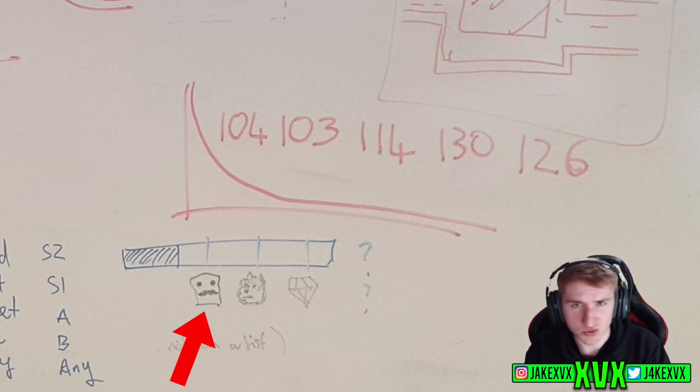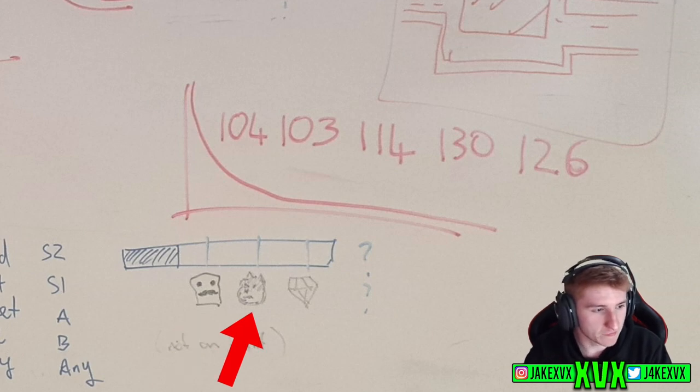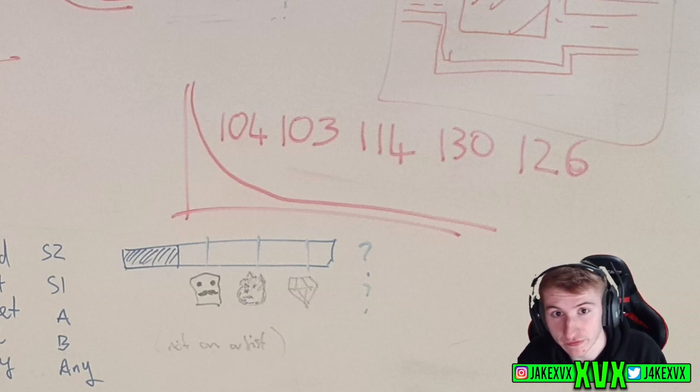We've got some kind of square face with some kind of moustache. A bit further along it looks to be some kind of, it looks like a dog almost. And then next to that a diamond.